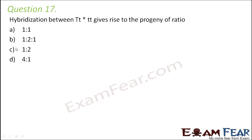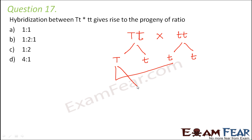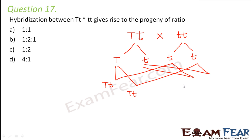Question number 17. Hybridization between capital T small t and small t small t gives rise to progeny of what ratio? So capital T small t crossed with small t small t. The gametes from the first parent are capital T and small t; from the second parent, only small t. The resulting progeny are: capital T small t, capital T small t, small t small t, small t small t.